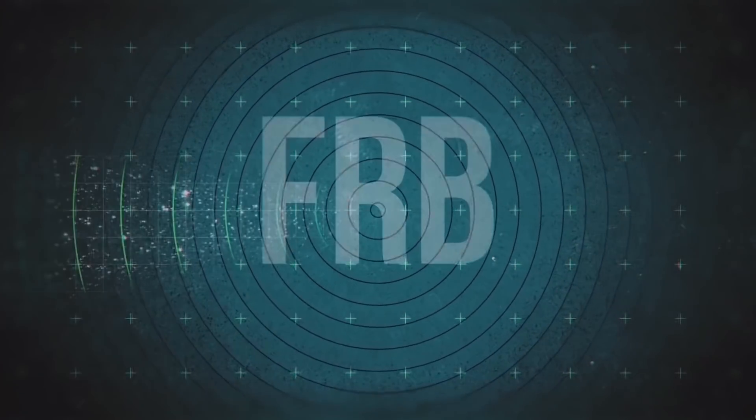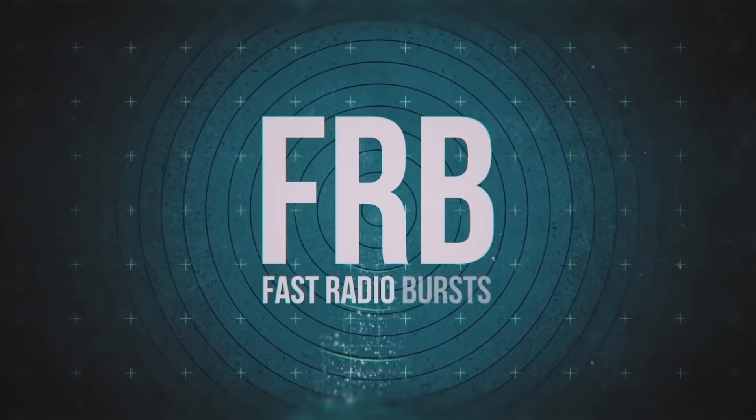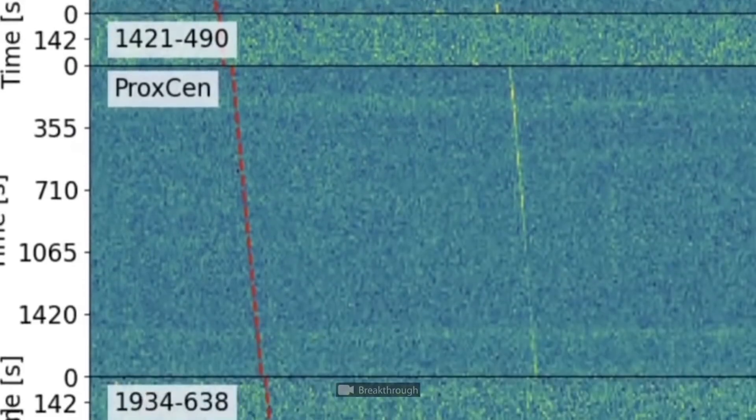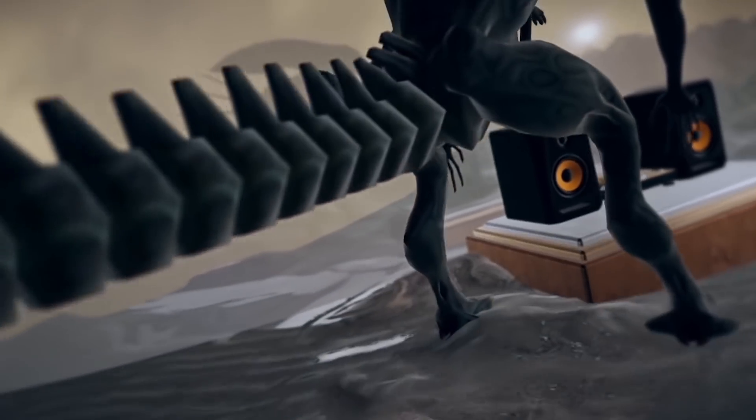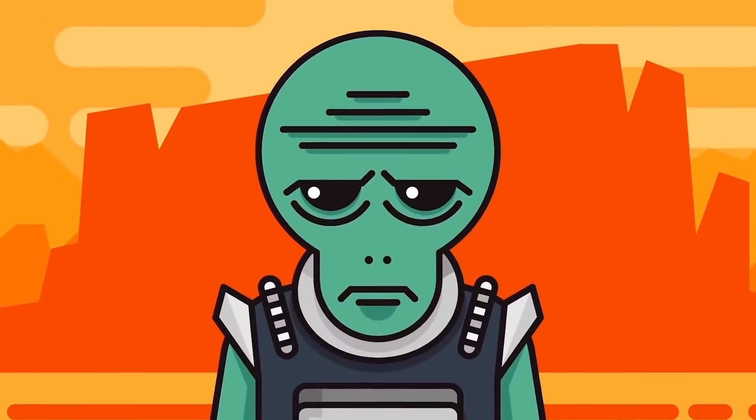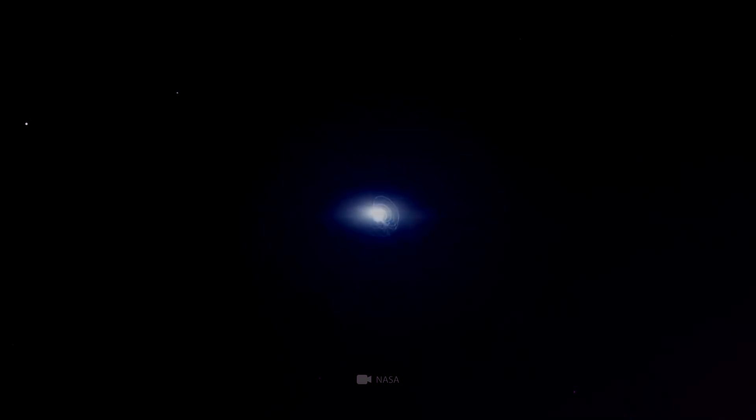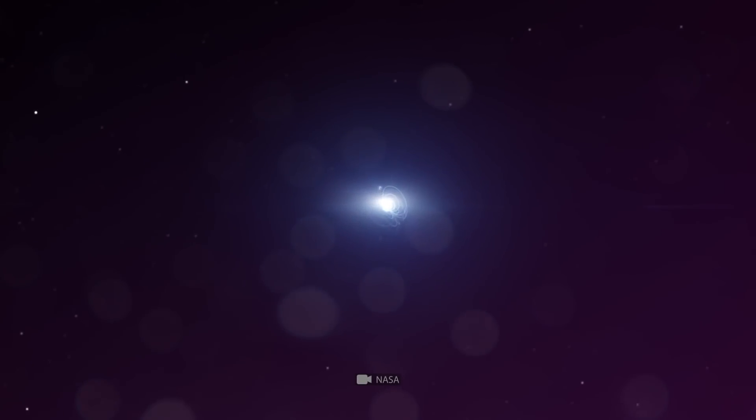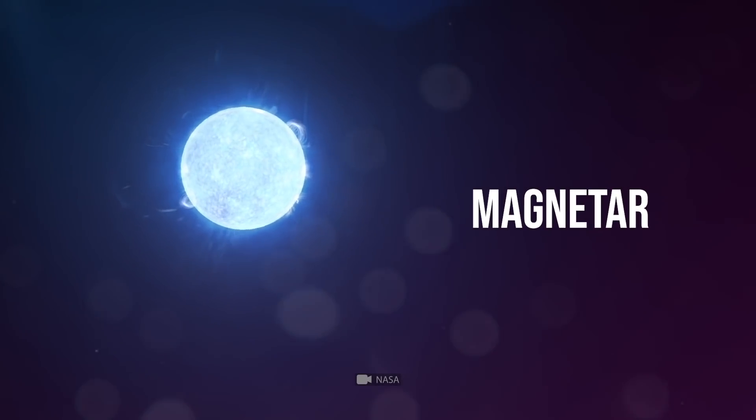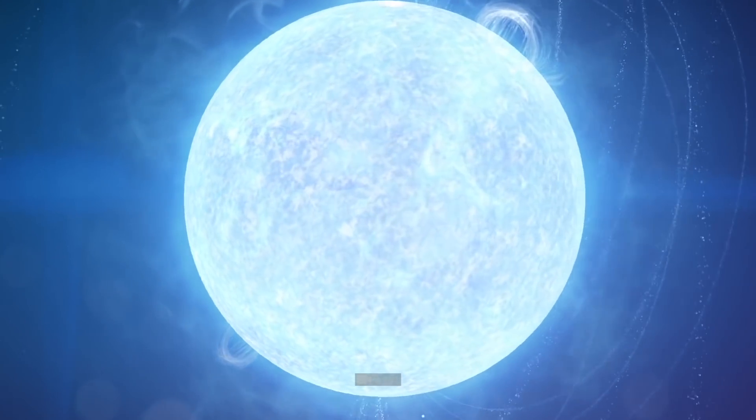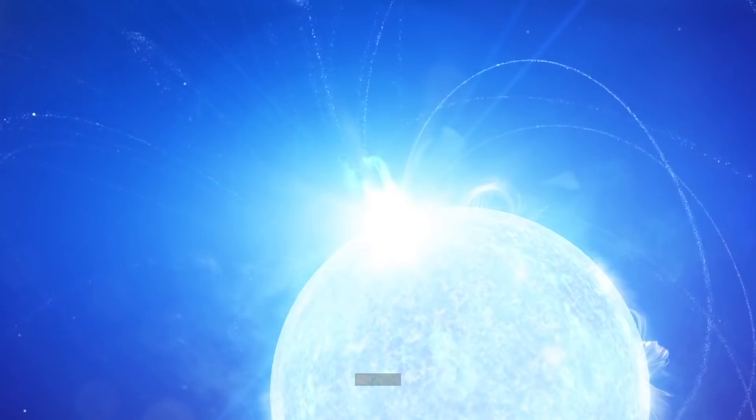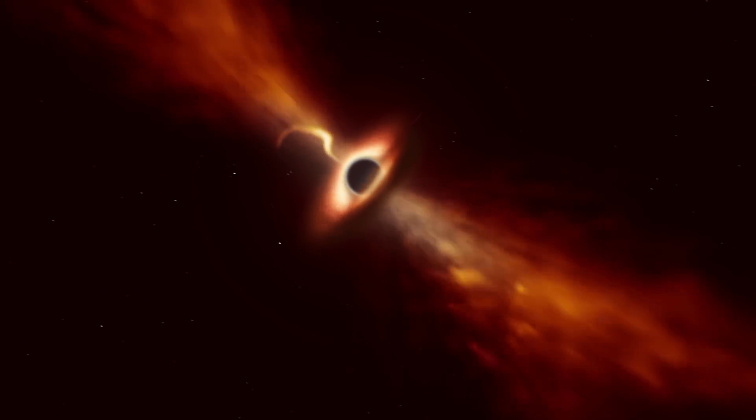These bursts of radio energy are so powerful that they cover billions of light-years to reach us. Could they be interstellar Wi-Fi signals? Of course, astronomers never take the possibility of aliens surfing the Internet seriously. These radio waves are thought to be produced by magnetars, abnormal neutron stars with an extremely powerful magnetic field. Or maybe it's the last scream of a neutron star disappearing inside of a black hole.